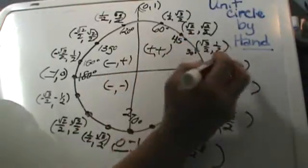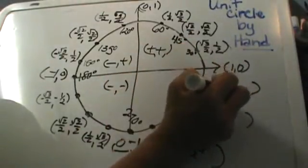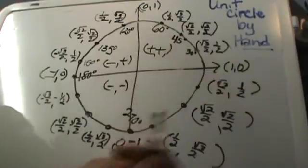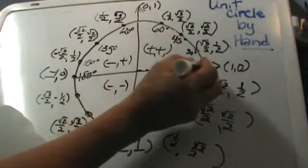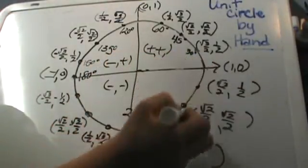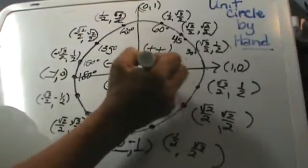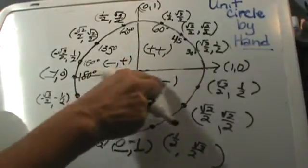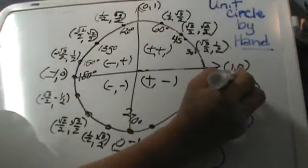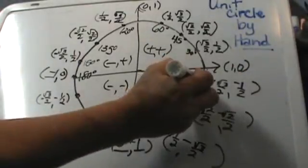And this one is square root of 3 over 2 and 1 half. Now let's think signs. This one is quadrant 4 so it's positive and negative. So positive followed by negative. That means our cosine is positive and our sine is negative. So go in and make the second coordinate negative. And there you go.